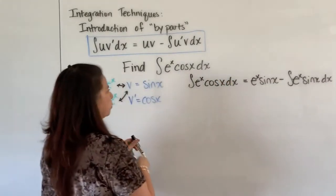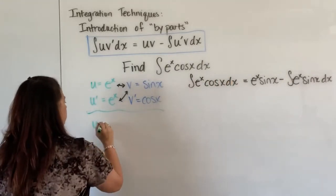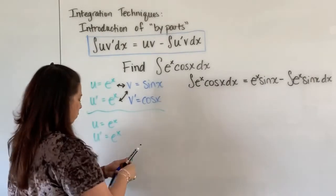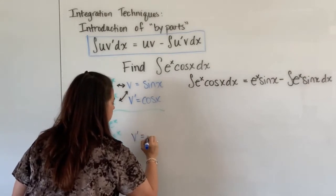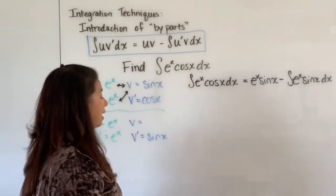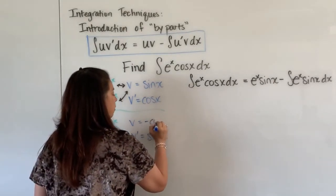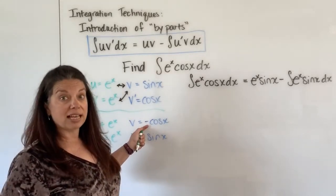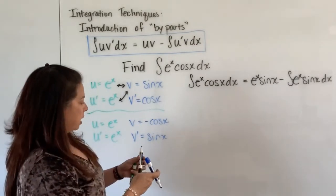Go back to my scratch work here. I'm going to let the e to the x be u. So I have u is equal to e to the x. u prime, of course, still e to the x. I will also let my v prime be sine x. So v prime is sine of x. Now I need to find the anti-derivative of sine x. We've seen this a few times already come up in our video examples. The anti-derivative of sine x will be negative cosine x. And of course, as always, you just double check yourself. If you took the derivative of negative cosine x, do you get positive sine x? And yes, we do.